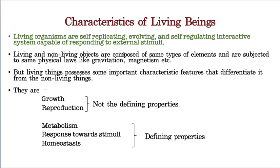One important point: living and non-living objects are actually composed of the same types of elements — carbon, hydrogen, oxygen, nitrogen. These same atoms are present in both living and non-living matter. They are also subject to the same physical laws like gravitation and magnetism. Then what makes the difference between living organisms and non-living objects? That is what we need to understand — how we are different from non-living objects.